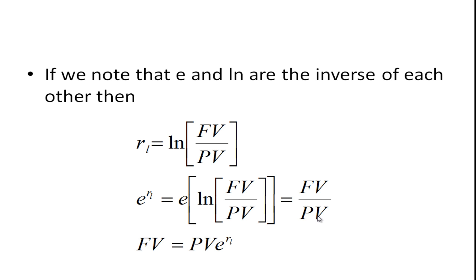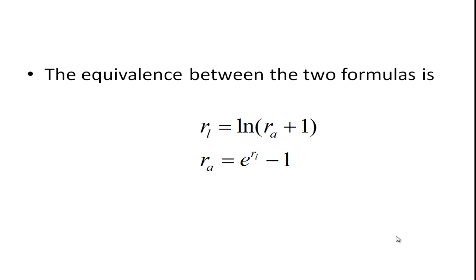And if I wanted to do a little manipulation, multiply both sides by PV, and then I could just rearrange terms, I would get future value equals PV e to the RL. So this is the continuously compounded future value equation.